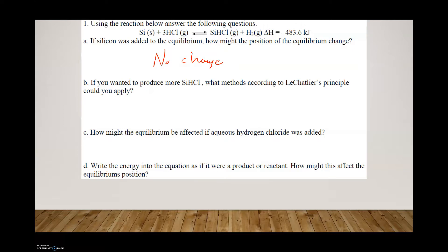Part B asks how to produce more products. Concentration: you could add more HCl or remove the products to shift right. Pressure: the left-hand side has three moles of gas versus two on the right, so increasing pressure shifts it to the right. Temperature: delta H is negative 483.6 kJ (exothermic), so heat is a product. Decreasing the temperature removes heat and shifts the equilibrium to the right. All three factors — concentration, pressure, and temperature — can be used.